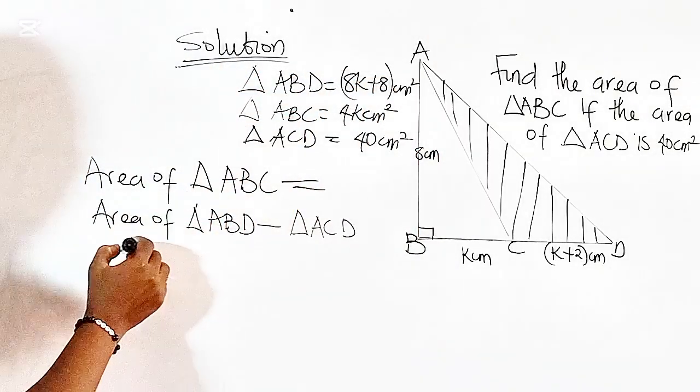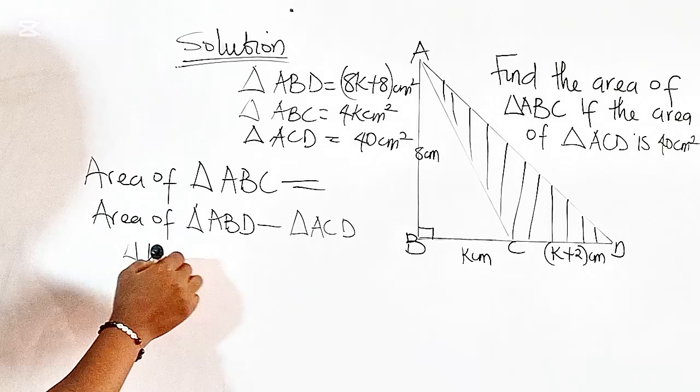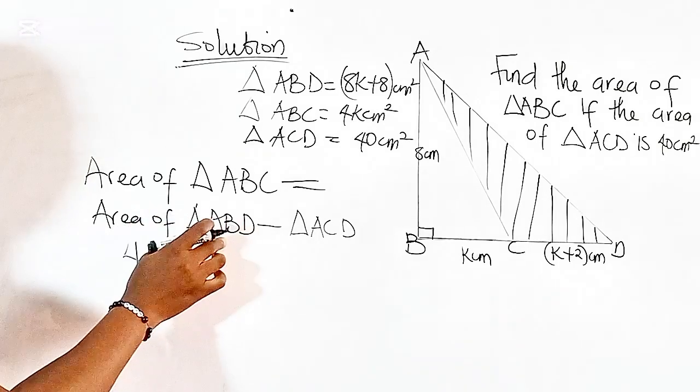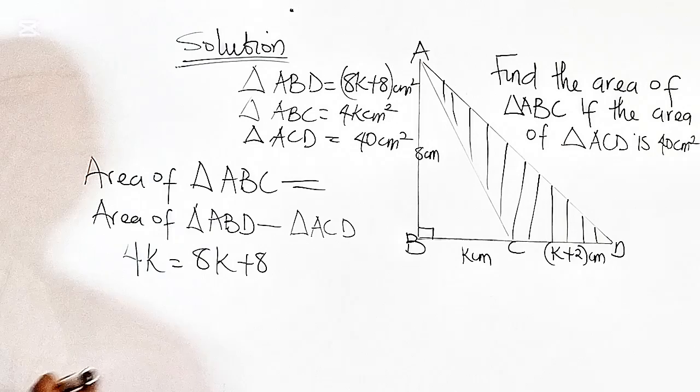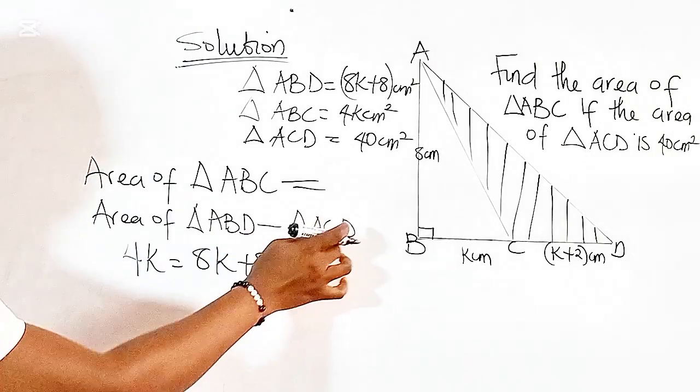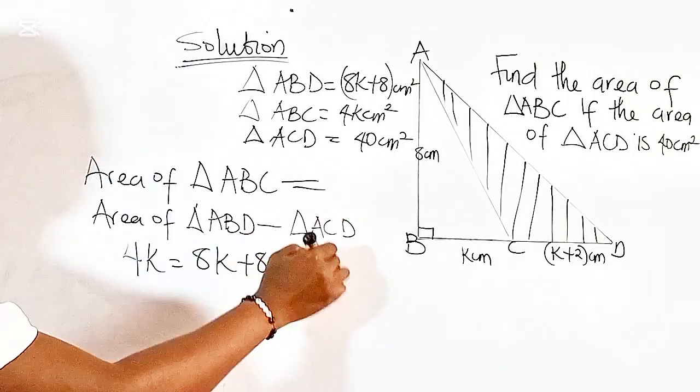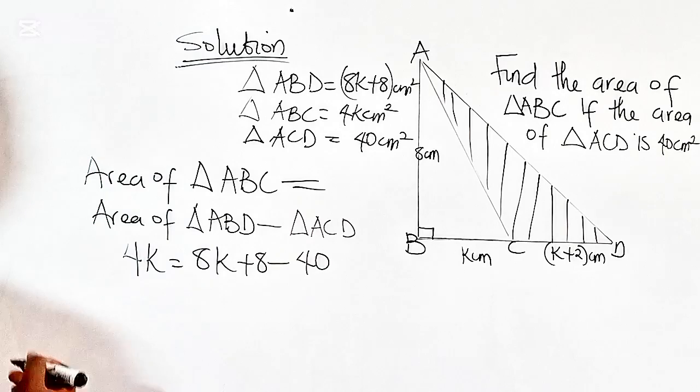So the area of triangle ABC is equal to 4K. And we have the area of triangle ABD to be 8K plus 8. Then we are subtracting the area of triangle ACD, which is 40 cm squared. Let's solve.